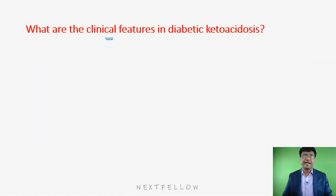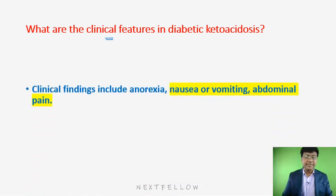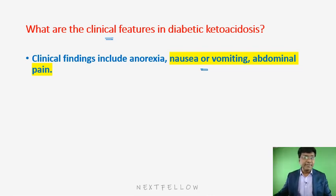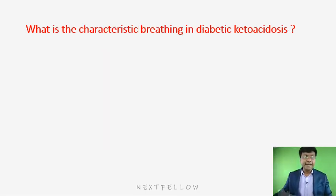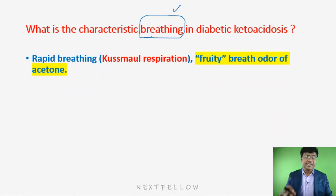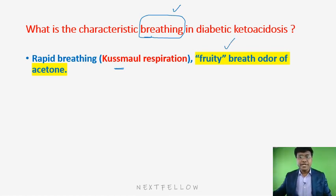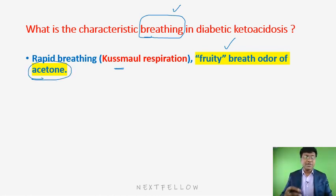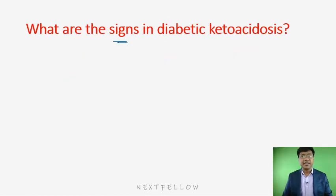The clinical features of diabetic ketoacidosis include nausea, vomiting, and abdominal pain. The characteristic breathing pattern is a very important MCQ point — it is periodic breathing called Kussmaul's respiration. The breath has a fruity odor due to acetone, giving a sweet-smelling breath.